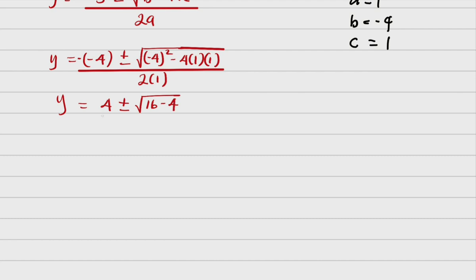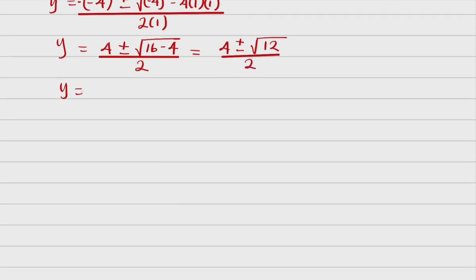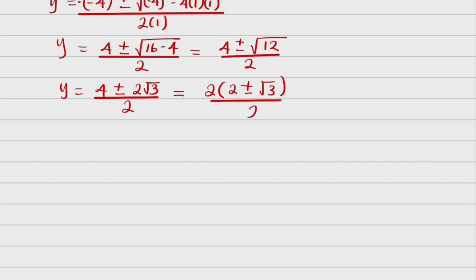This becomes 4 plus or minus root of 12, all over 2. I can simplify root of 12 as 2 root of 3, giving 4 plus or minus 2 root 3, all over 2. Factorizing the numerator: 2 times (2 plus or minus root of 3), all over 2. The twos cancel, so y equals 2 plus or minus root of 3.